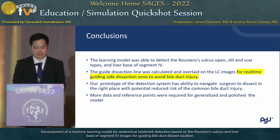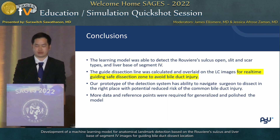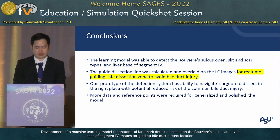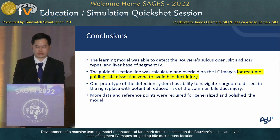In conclusion, the AI landmark detection system successfully creates a guide line between Rouvière's sulcus and liver segment 4. Our prototype guides the surgeon during laparoscopic cholecystectomy, potentially reducing the risk of bile duct injury.